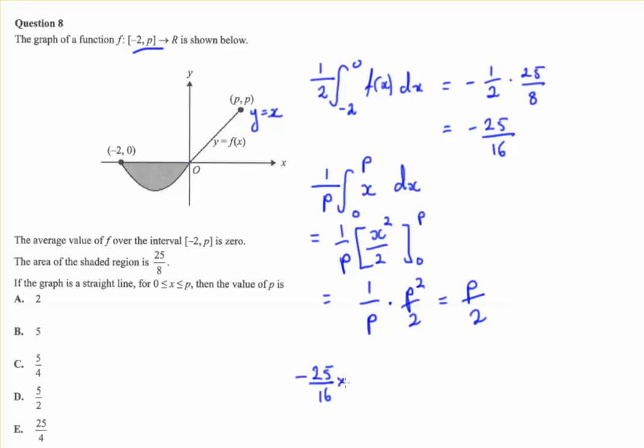So you need to multiply it by the length of the interval. Then it's the same for the other one. You take the average value over the interval, and you multiply it by the length of the interval, which is p units.